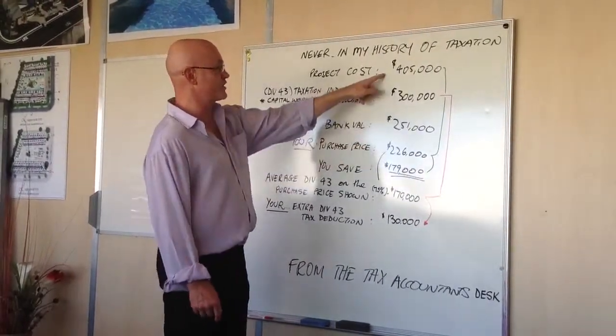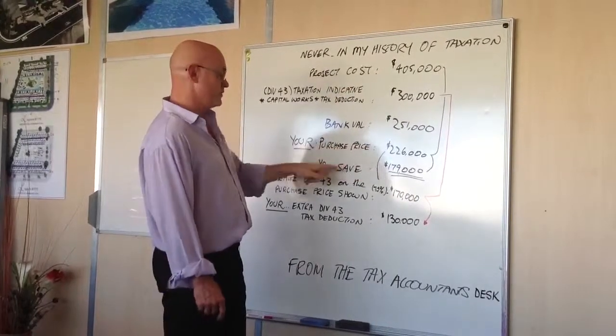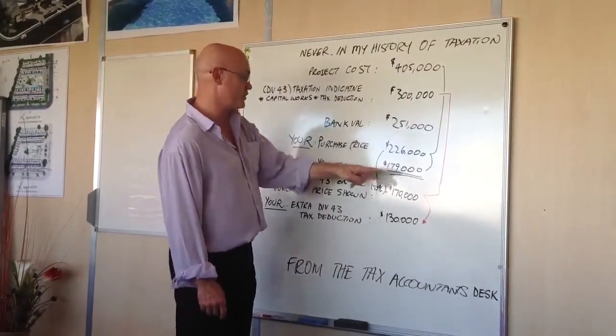So basically between project cost and what you pay, you save $179,000 on this particular unit.